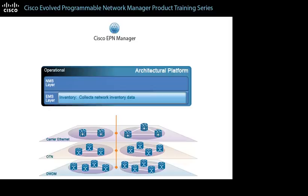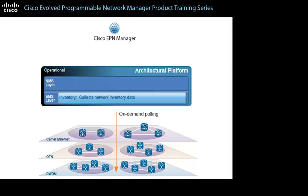The function also synchronizes the inventory data that it collects with network data by using polling. The types of polling that the system can perform include periodic polling, which collects device data following a schedule; on-demand polling, which users can perform as needed; and event-based polling, which prompts the system to collect device data when events occur that an administrator has configured to initiate polling automatically.